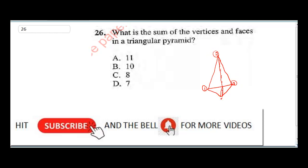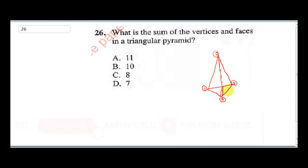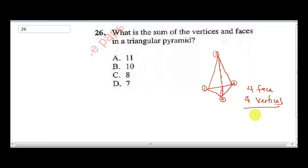And that is four, so it has four vertices. Now where are the faces? Because this is a triangular pyramid based on the triangle, it's going to have how many faces? This will be one, this will be two, the back will be three, and the down part will be four faces. So automatically it has four faces and four vertices. When you sum it up, you get eight. So the correct answer here is eight.